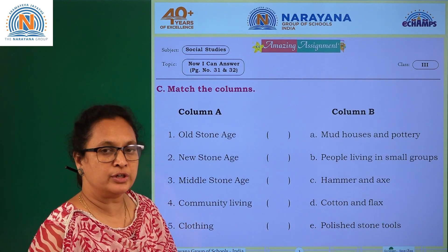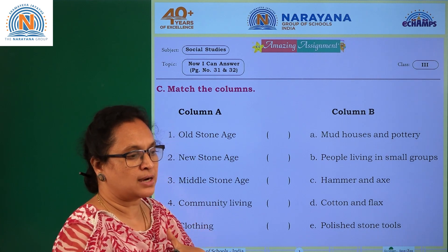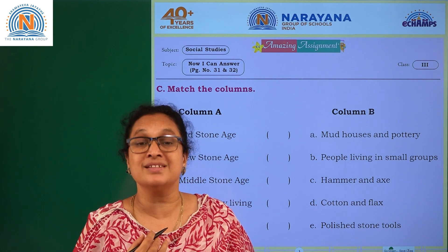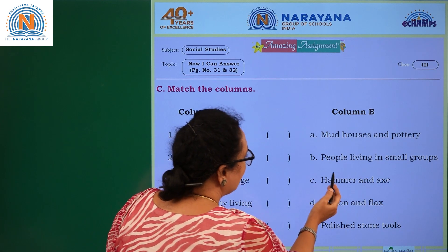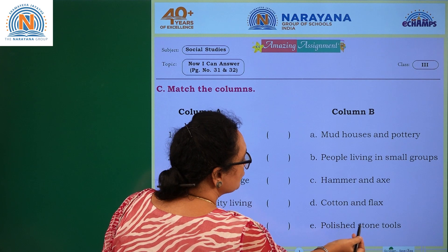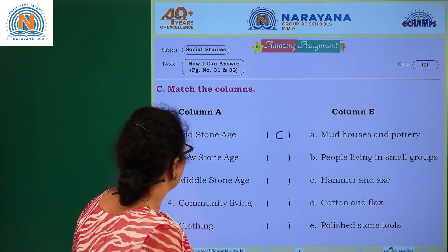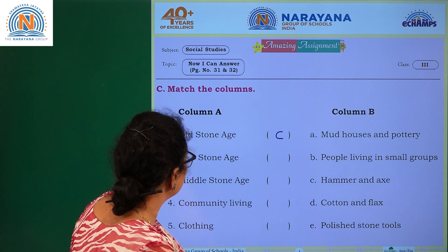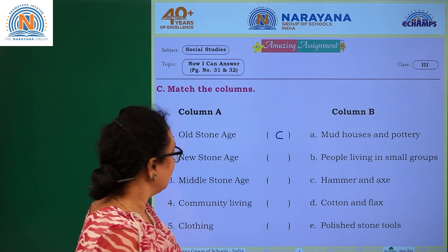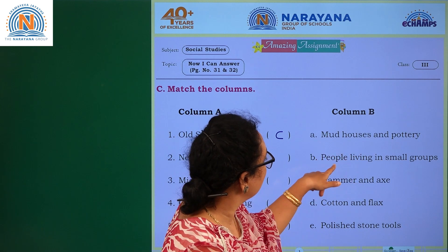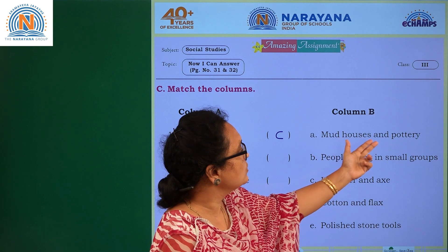Now we have match the column. For old stone age: the options include mud houses and pottery, people living in small groups, hammer and axe heads, cotton and flakes, and polished stones. Old stone age answer is hammer and axe heads — option C. For new stone age, we go for mud houses and pottery — because the wheel was discovered and pottery began.